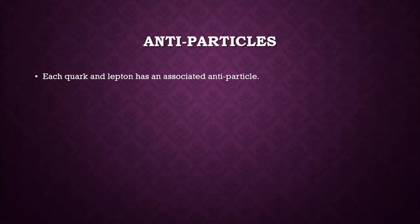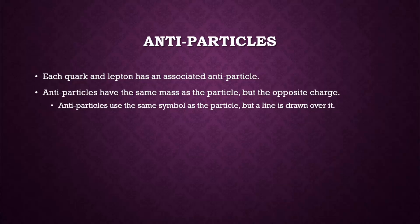Each quark and lepton has an associated antiparticle. Antiparticles have the same mass as the particle but the opposite charge. Antiparticles use the same symbol as the particle, but they have a line drawn over it.